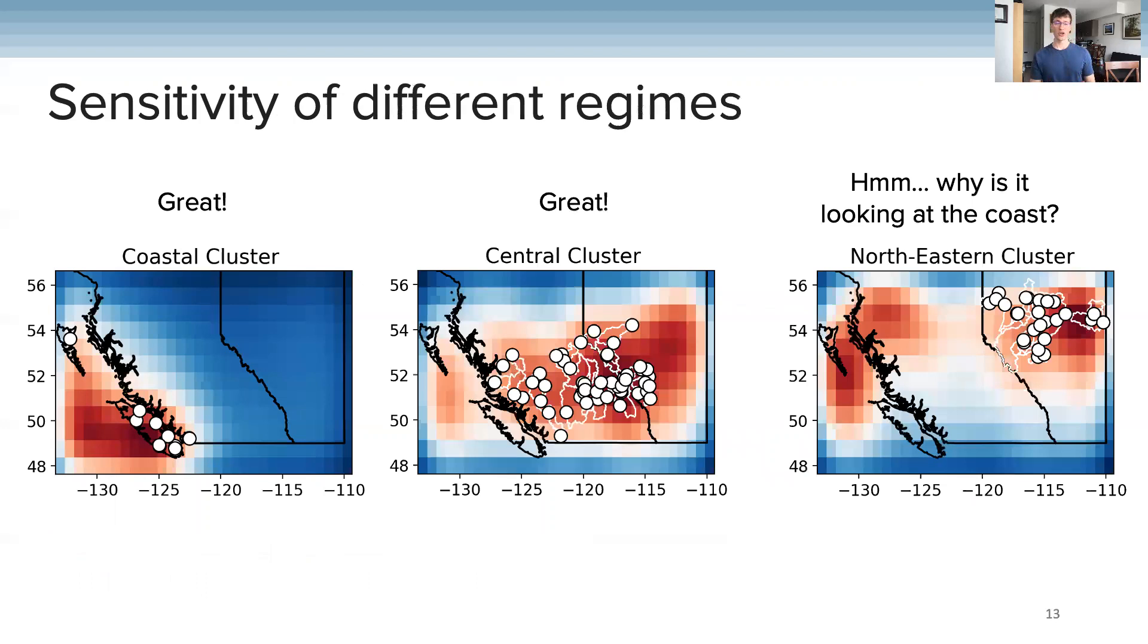However, things are not always so clear cut. Here in the northeast, the model is very sensitive in the northeast, which makes sense, but then it's also very sensitive along the west coast. So we might ask, what's going on?